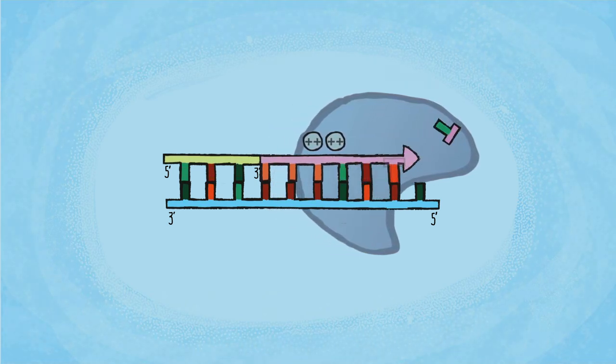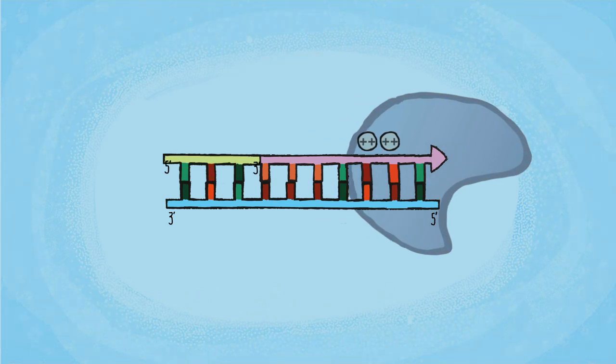DNA polymerase can only synthesize in the 5' to 3' direction by extending the 3' end of the primer.